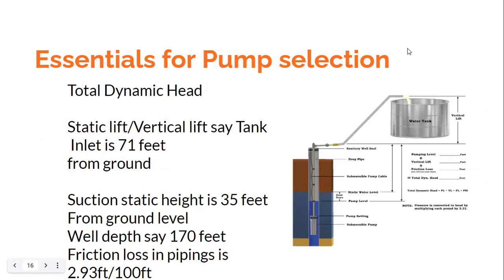For example, let us say the tank — meaning the outlet of the water in the tank — is at a height of 71 feet from the ground. That gives us the static lift or vertical lift. Now let us say the water level from the ground is about 35 feet. If you put a tape inside the well and measure where the tape touches the water level, that height is the suction static height — in this case 35 feet from ground level. Let us say the well depth is 170 feet.